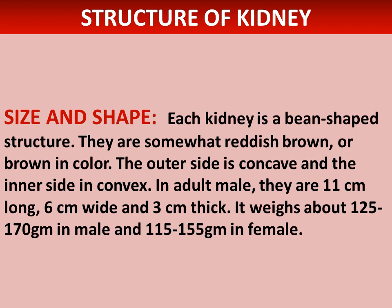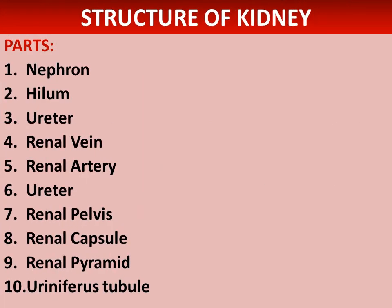Regarding size and shape, each kidney is a bean-shaped structure, somewhat reddish-brown or brown in color. The outer side is concave and the inner side is convex. In adult males they are eleven centimeters long, six centimeters wide, and three centimeters thick.